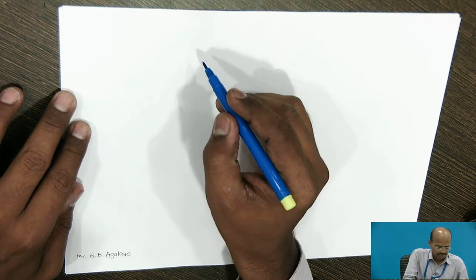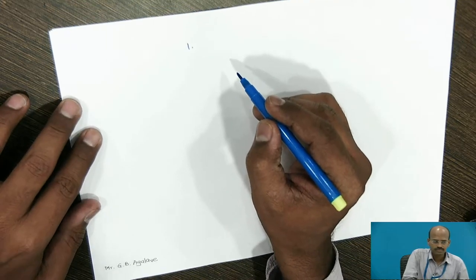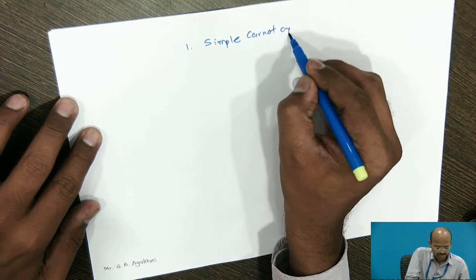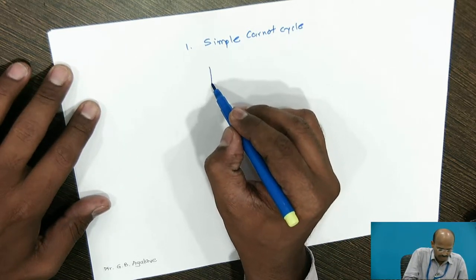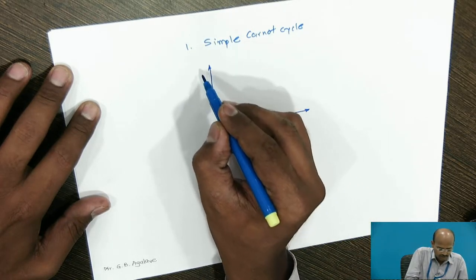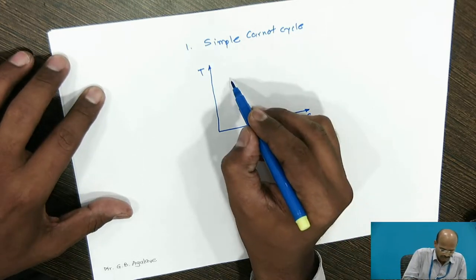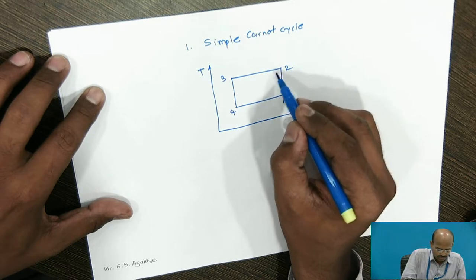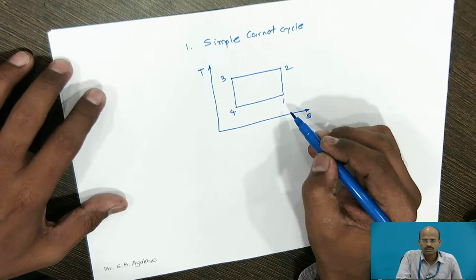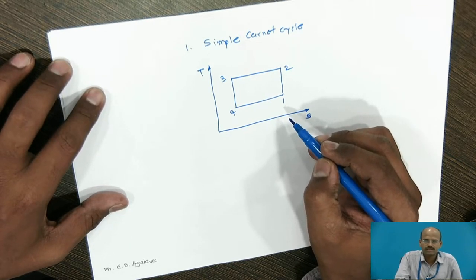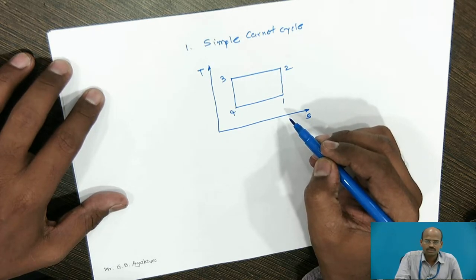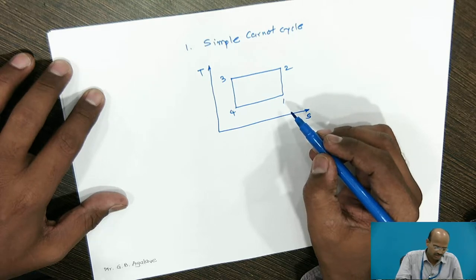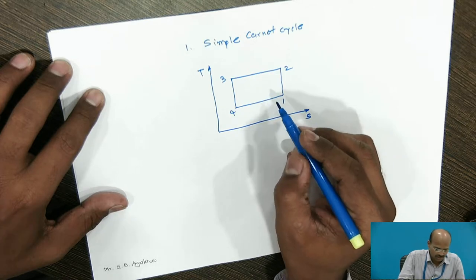In the first part, simple Carnot cycle. In the simple Carnot cycle, there are four processes. I will show these four processes on T-S diagram. Process 1 to 2, 2 to 3, 3 to 4, and 4 to 1. Already, you have studied this Carnot cycle in basic mechanical engineering in first year. Can you think over the two types of the process involved in the Carnot cycle? Try to recall. Yes. There are two isothermal processes and two isentropic processes.